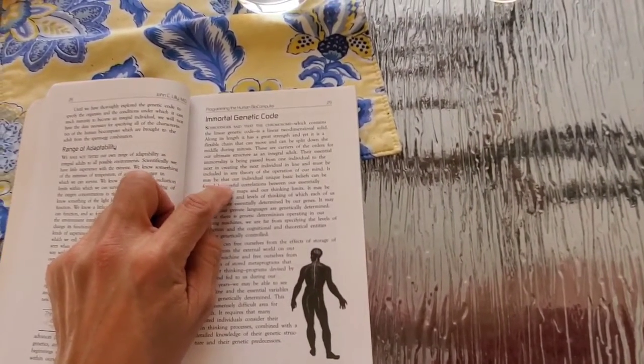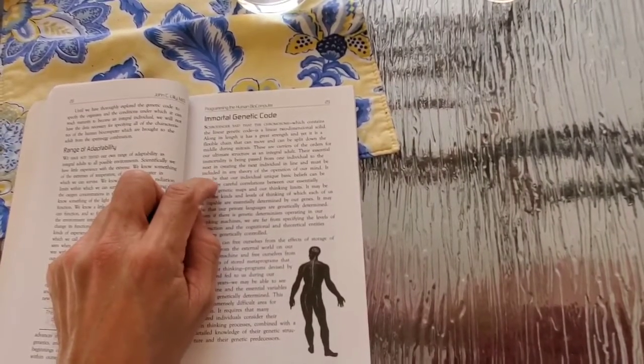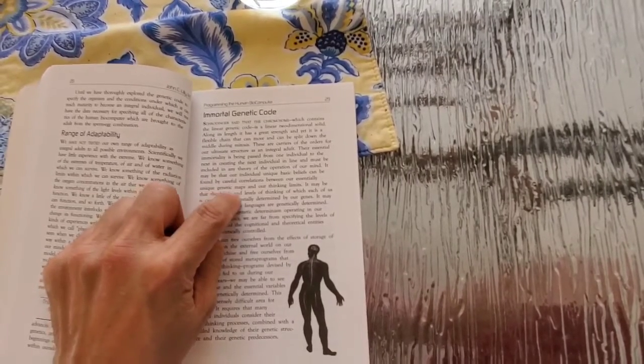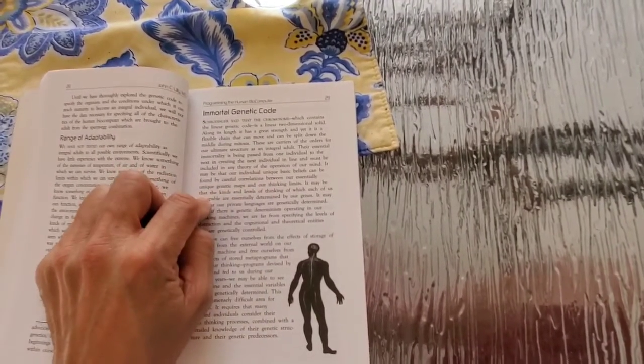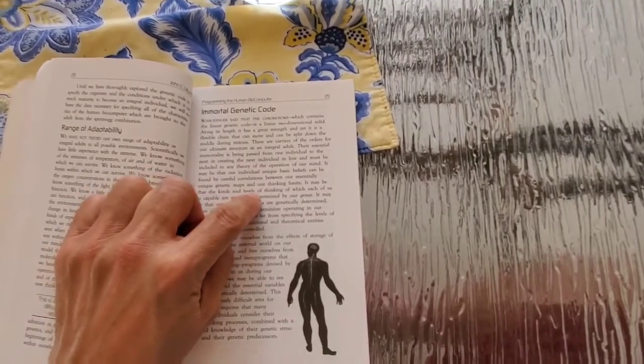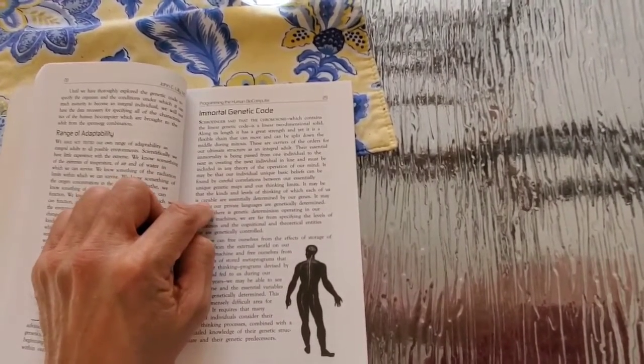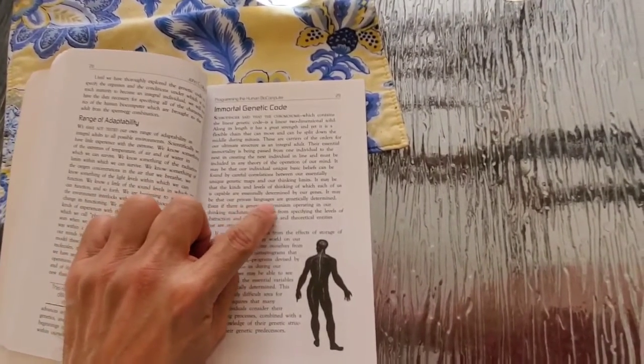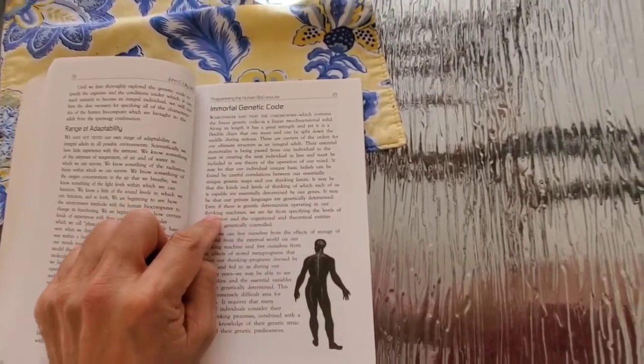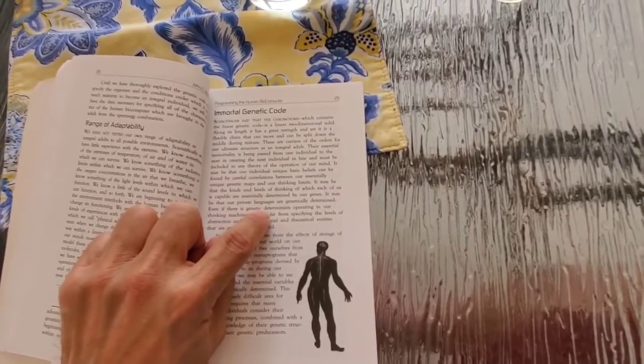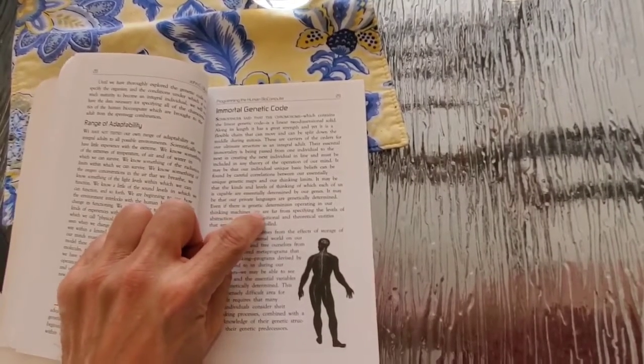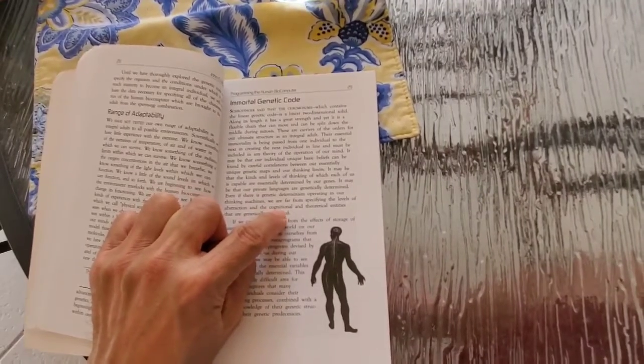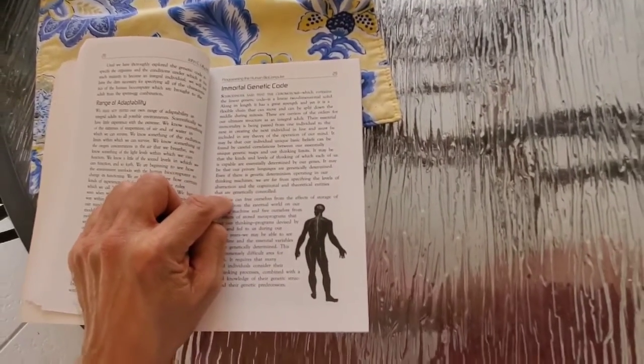It may be that our individual unique basic beliefs can be found by careful correlations between our essentially unique genetic maps and our thinking limits. It may be that the kinds and levels of thinking of which each of us is capable are essentially determined by our genes. It may be that our private languages are genetically determined. Even if there is genetic determinism operating in our thinking machines, we are far from specifying the levels of abstraction and the cognitional and theoretical entities that are genetically controlled.